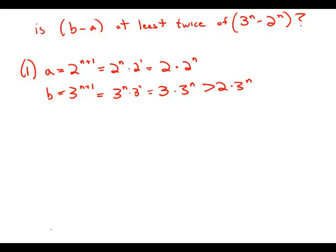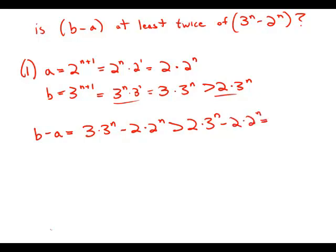Well, b minus a would equal 3 times 3 to the n minus 2 times 2 to the n. This would be larger if we replace this with this. It would be larger than 2 times 3 to the n minus 2 times 2 to the n. And of course, that's equal to twice 3 to the n minus 2 to the n.